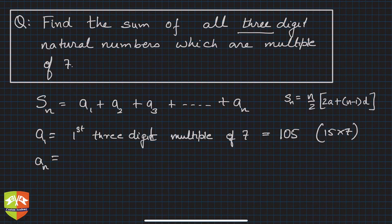N is important and for that we need to know the an. So what is the last three digit number which is divided by seven? 999 clearly not.